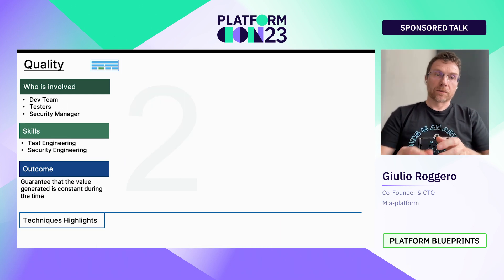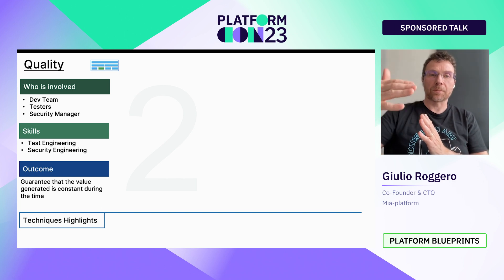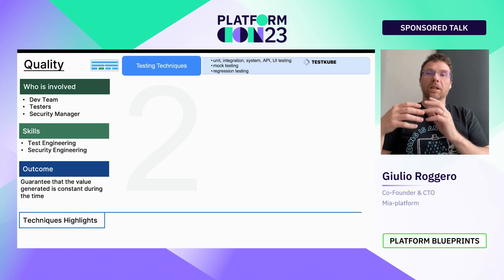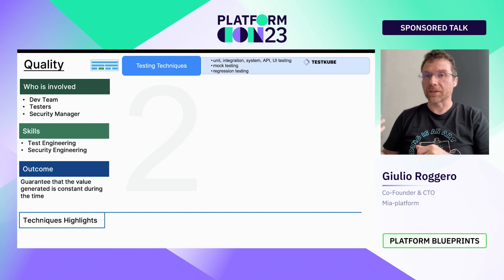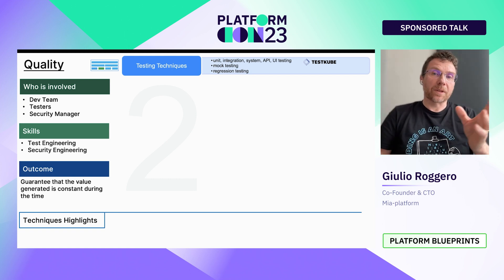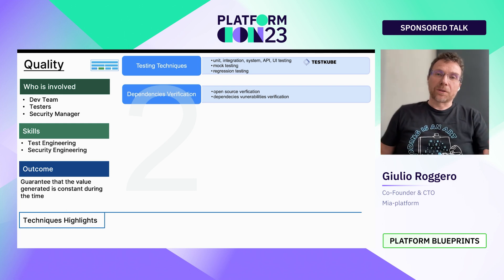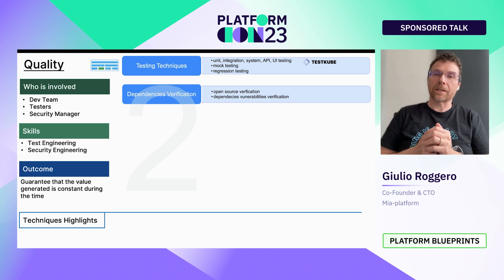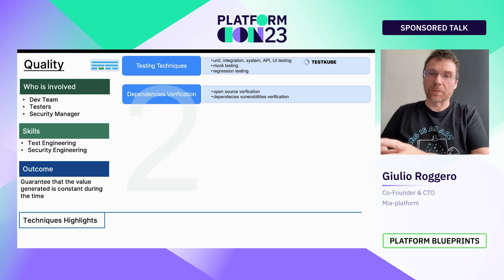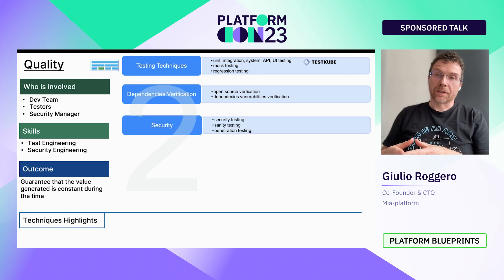The second blueprint is Quality. Quality is important because its outcome is a guarantee that value is generated consistently over time — not just when you first release the application. Implement testing from the beginning of the project: unit testing, integration testing, system API testing, and regression testing, since sometimes fixing one problem can reopen a previously fixed one. Dependency management is also critical: verify open-source license compliance and vulnerability scanning, because including a corrupted dependency can open serious security problems.